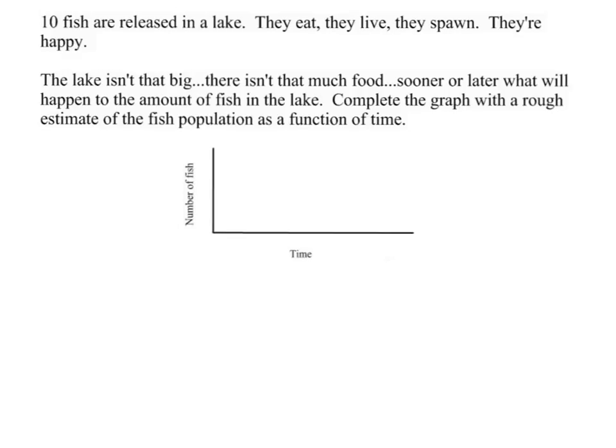So you can see here, I said 10 fish are released in a lake. They eat, they live, they spawn, they're happy. But at a certain point, you're going to start running out of food, and the amount of fish will maybe not decrease, but will level off based on the number of resources.